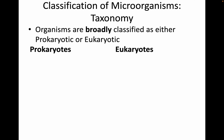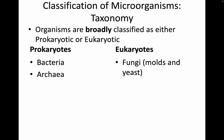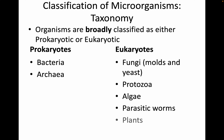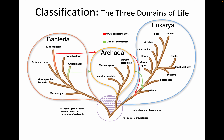Organisms are broadly classified as either prokaryotic or eukaryotic. Prokaryotes include bacteria and archaea. Eukaryotic microbes are fungi like molds and yeast, protozoans, algae, and parasitic worms, and some plants and animals.